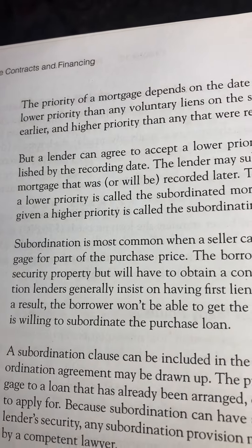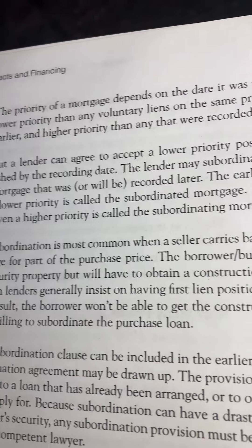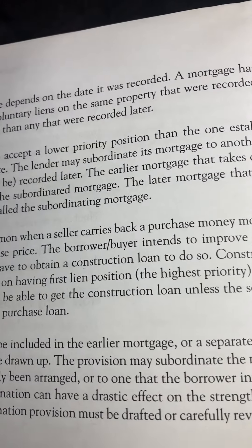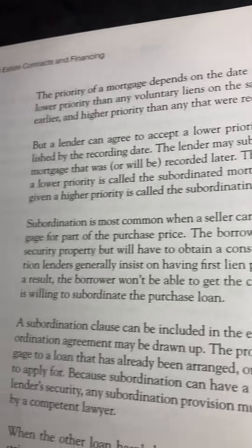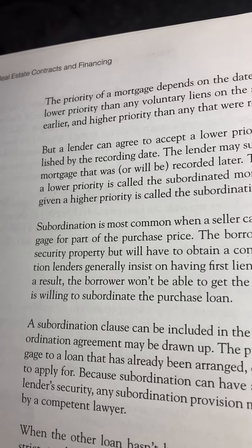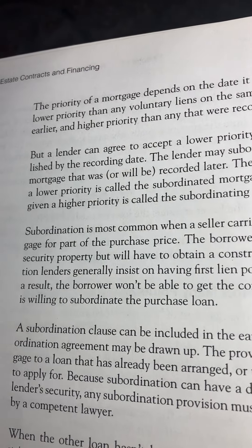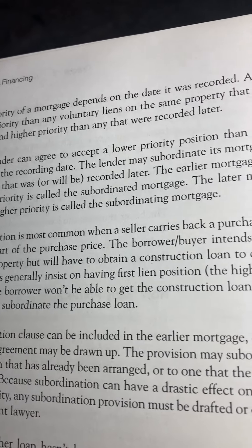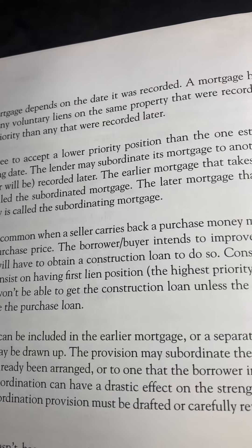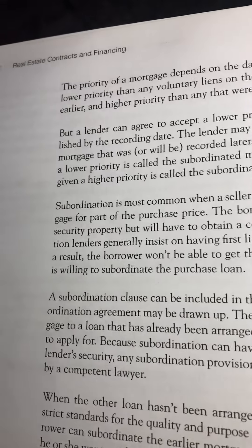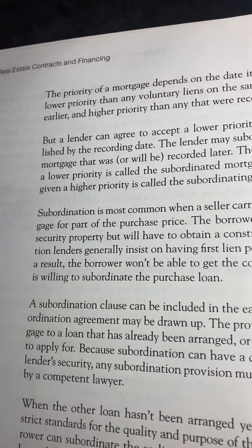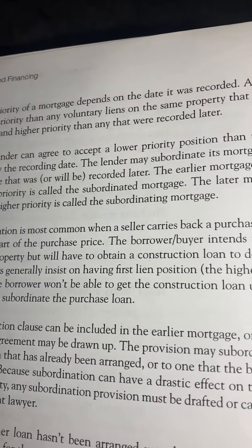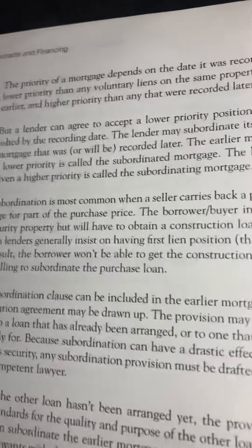The priority of a mortgage depends on the date it was recorded. A mortgage has lower priority than any voluntary liens on the same property that were recorded earlier, and higher priority than any that were recorded later.